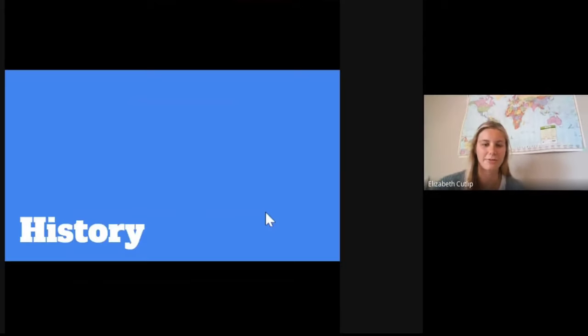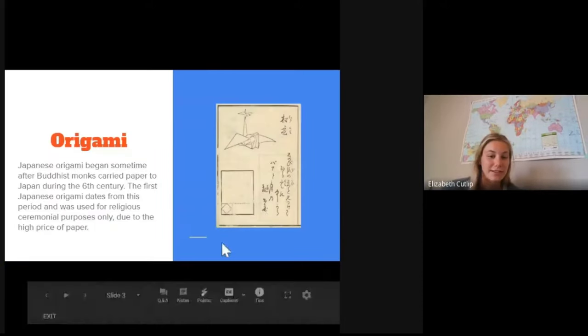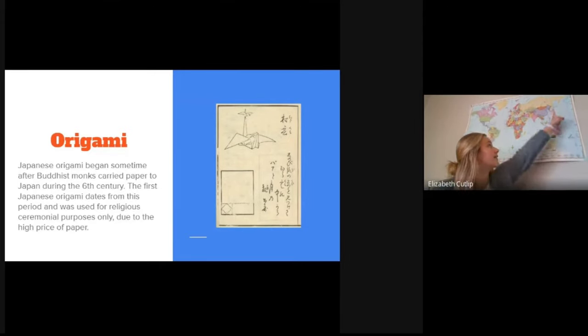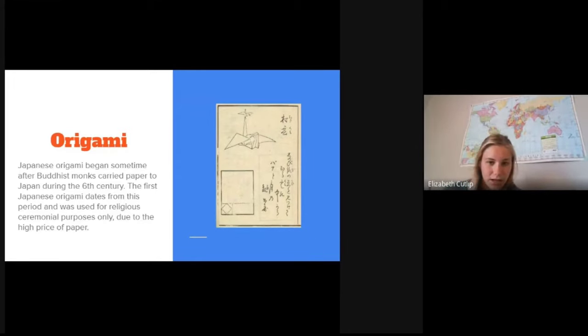So to start things out, we are going to talk about some history behind paper cranes. So first, this all stems from origami, which is of Japanese origin. And that is right here on the map over in the Asian region. So Japanese origami began sometime after Buddhist monks carried paper to Japan during the 6th century. And if you can see there on the right side of the presentation, you can see one of the first sketches of a paper crane. This was mostly used for ceremonial purposes way back when because paper was actually really expensive.